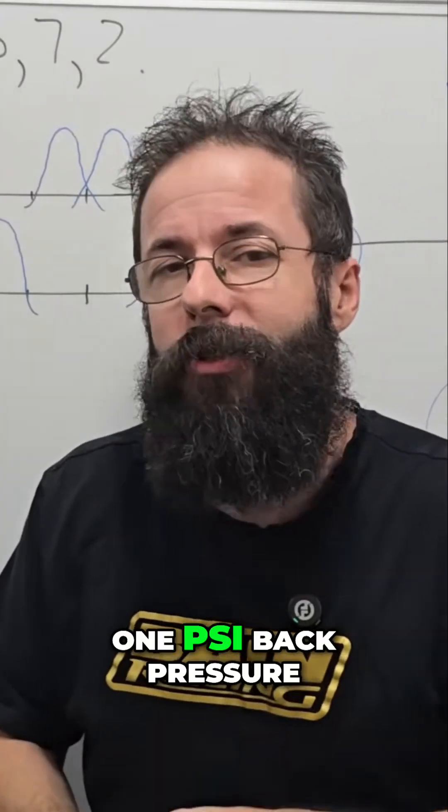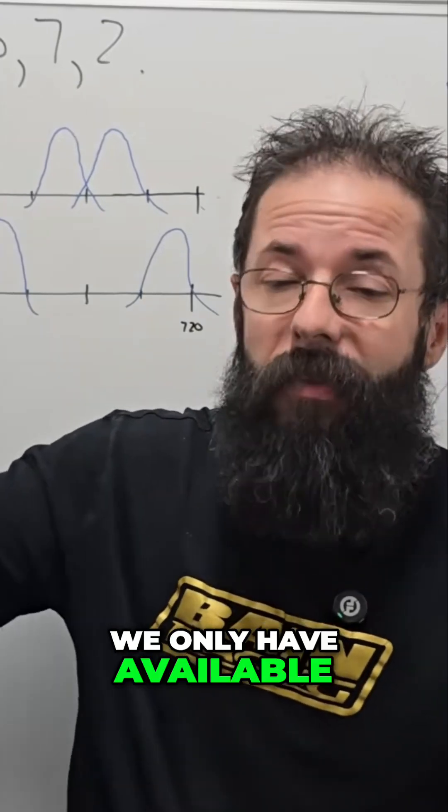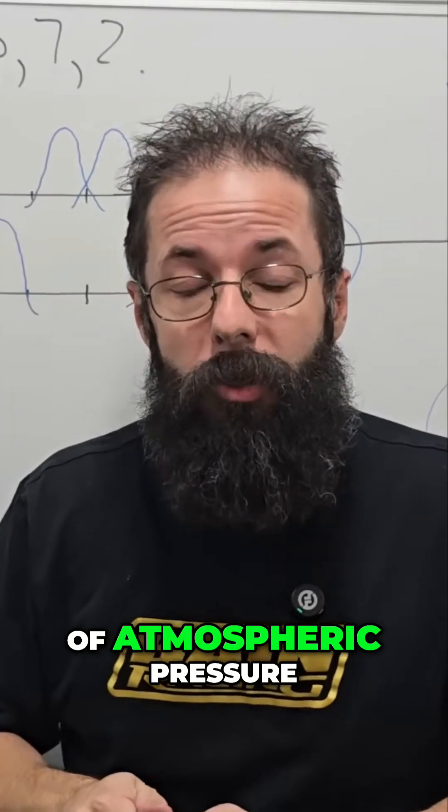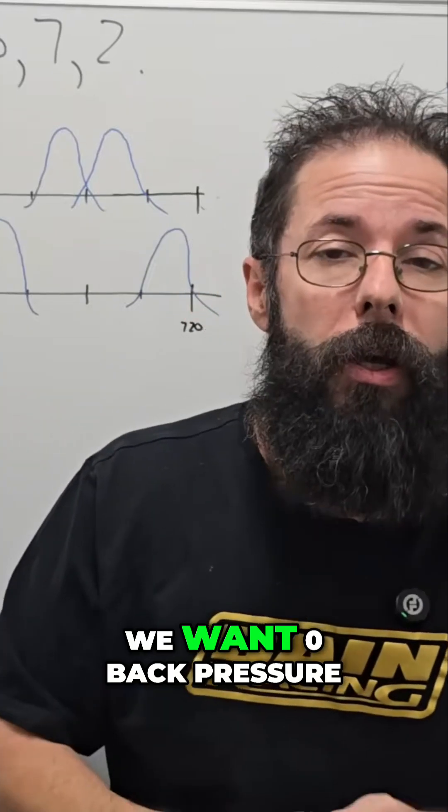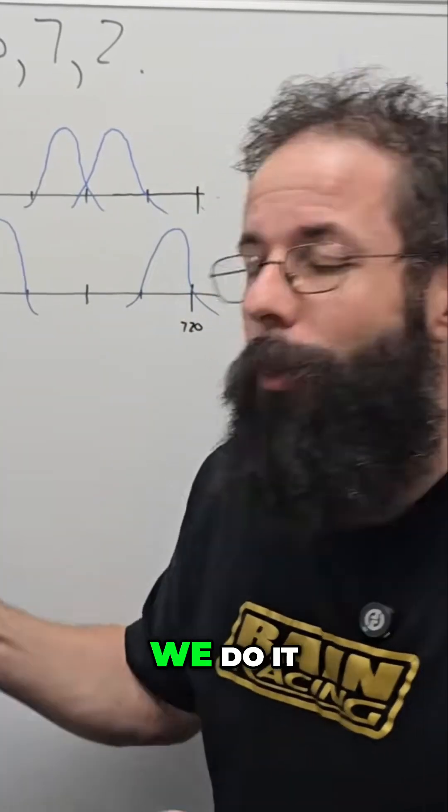So if we have one psi back pressure in our exhaust system, we only have available to us 13.7 pounds of atmospheric pressure. So not only do we want zero back pressure, we want negative pressure, and this is how we do it.